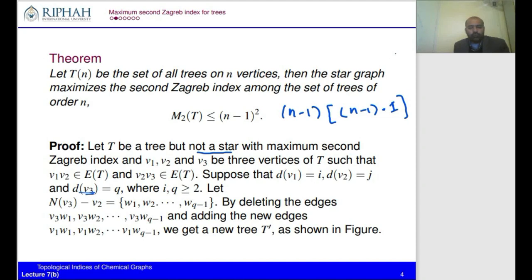We remove vertices w1, w2, ..., w_{q−1} from vertex v3 and join them to vertex v1, creating new edges v1w1, v1w2, ..., v1w_{q−1}. In this way we obtain a new tree denoted T'. We now have two trees: the original T and the transformed T'.